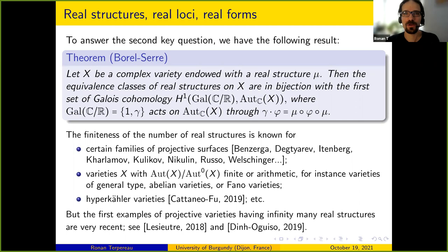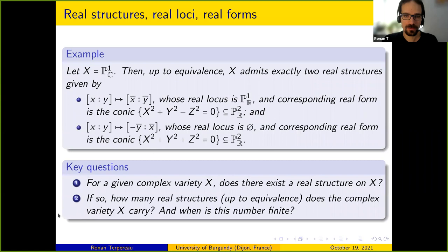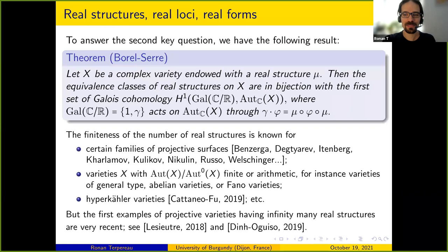So this is the picture in the classical setting. The two main key questions are: existence and enumeration. Now I would like to consider varieties with algebraic group actions, and I will modify slightly the framework and the previous definitions.